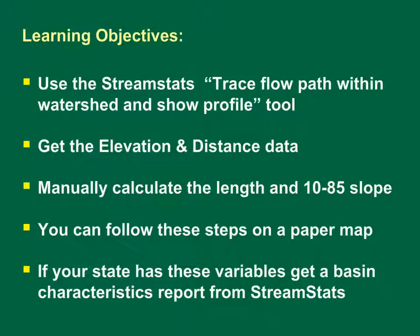This training module has five learning objectives. At the end of this module, you should be able to use the StreamStats trace flow path within watershed and show profile tool, get the elevation and distance data, manually calculate the length and 1085 slope, realize that you can follow these steps on a paper map, and if your state has these variables, get a basin characteristics report from StreamStats.